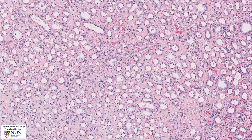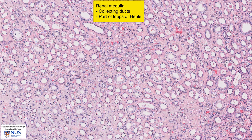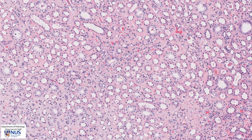This area looks quite different, and this is the renal medulla, which comprises collecting ducts and part of the loops of Henle. We do not see glomerular structures here.